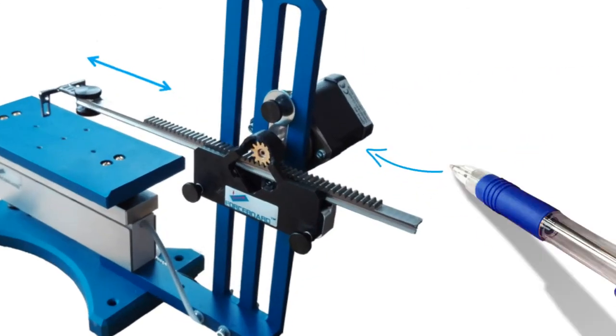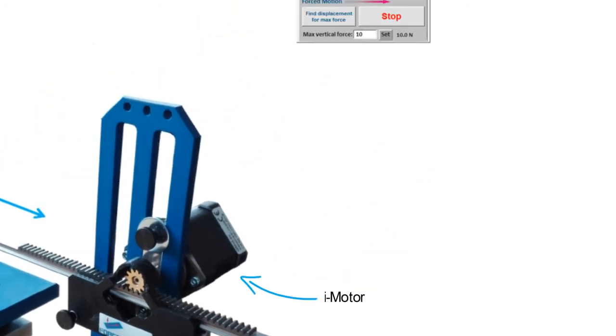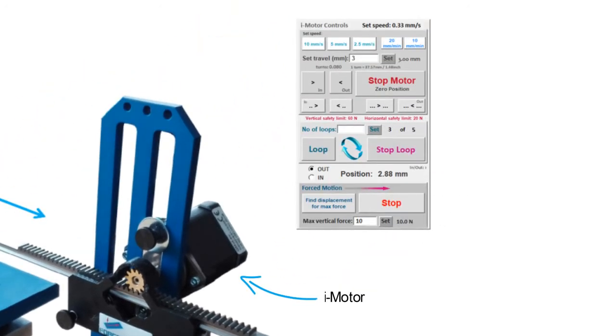ForceBoard iMotor, a highly accurate and programmable motor with variable speed and variable stroke length that can easily be set up for automated test sequences running for several thousand test cycles via the included control panel.